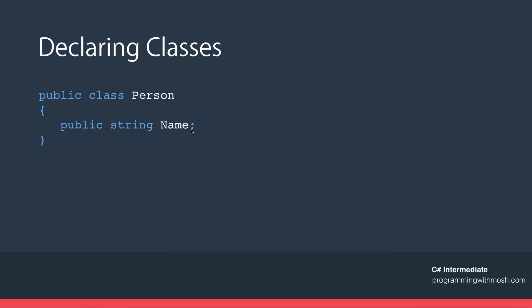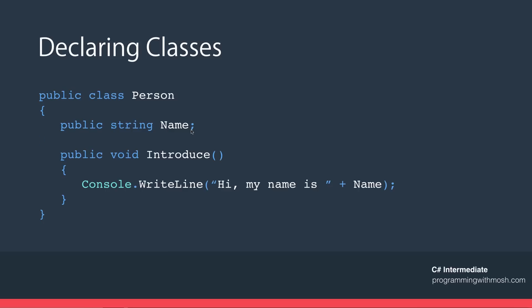In real-world applications we shouldn't declare fields as public — we're doing that here temporarily to keep things simple; we'll learn a better approach when we cover access modifiers. To declare a method, we start with an access modifier, then the return type — `void` means it returns nothing — then the method identifier, then parameters in brackets. Inside the method body we can access any members of the class. For example, using Console.WriteLine to display the person's name.